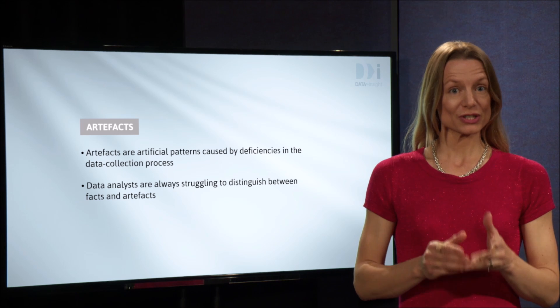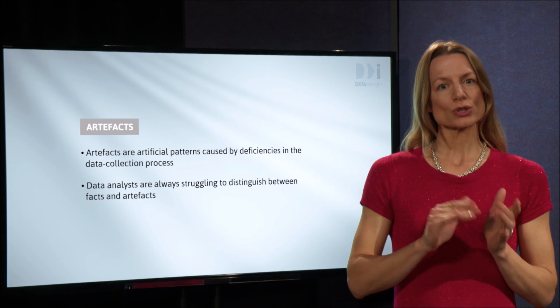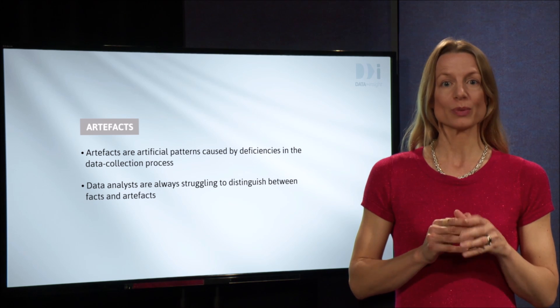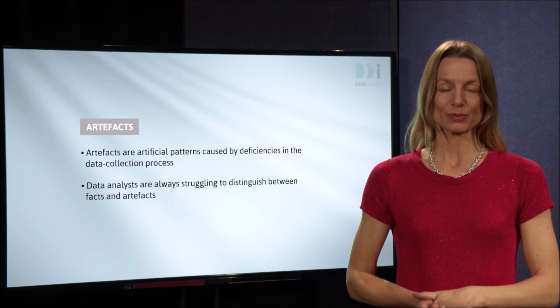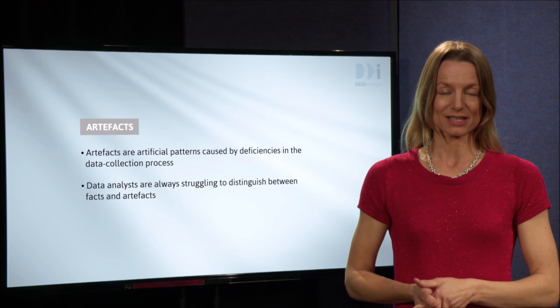The type of deficiency we've just shown was in the measurement process. The distortions we showed were small, however, compared with some of those in the readings for this week. Next we'll show how a selection process can distort a relationship.